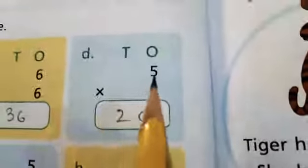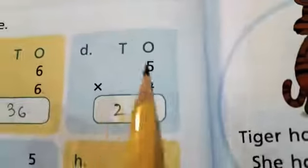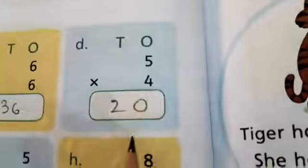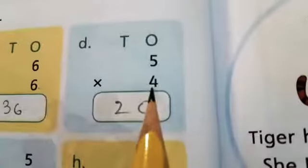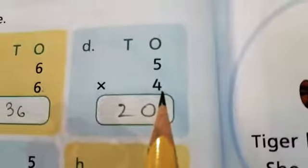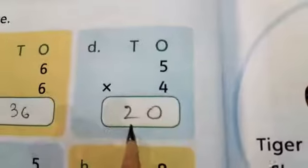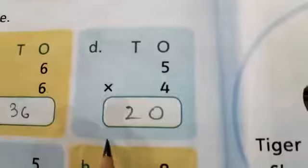Part D, 10s and 1s. 5 multiply 4 or 4 multiply 5. Answer will become same. Start table of 4: 4-1 is 4, 4-2s are 8, 4-3s are 12, 4-4s are 16, 4-5s are 20. So write 0 in 1s place and 2 is in 10s place.